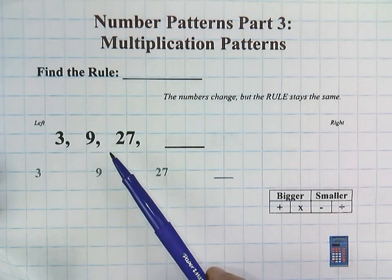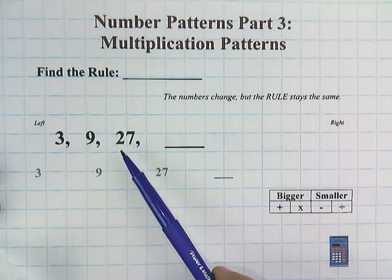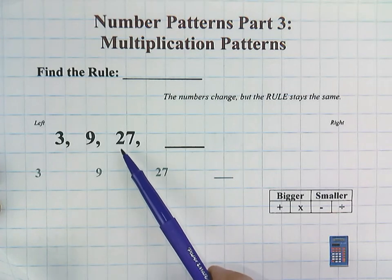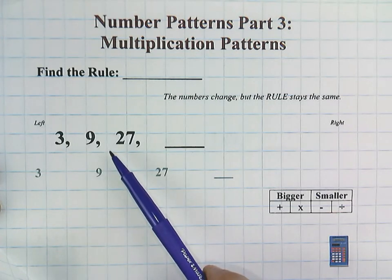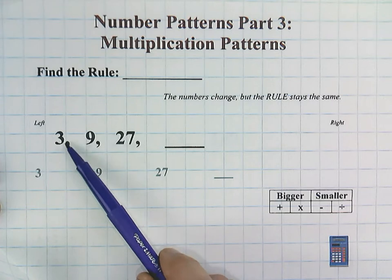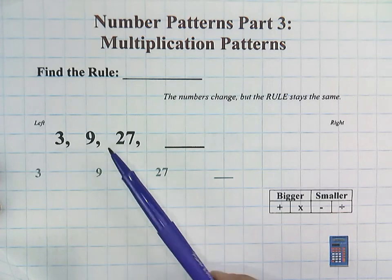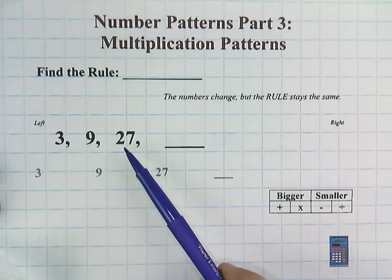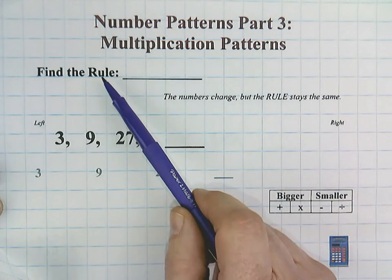A number pattern involves a set of numbers that runs, usually from left to right. The numbers are changing, and it is our job to figure out what is happening. Are we adding, subtracting, multiplying, or dividing? And then, by how much? That is called the rule.